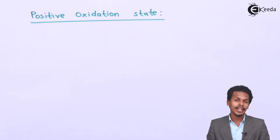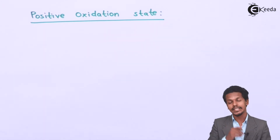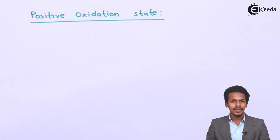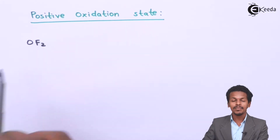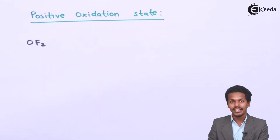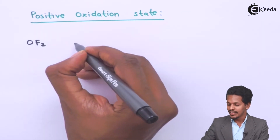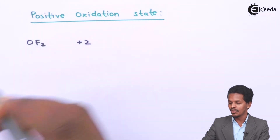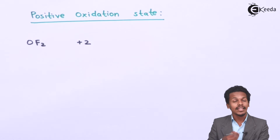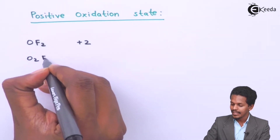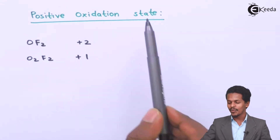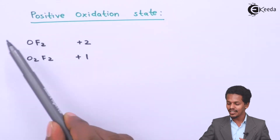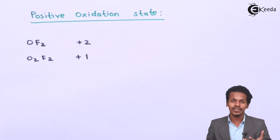Oxygen is the most electronegative element of group 16, but it is not always the case. For example, in OF₂, fluorine is the most electronegative element, so oxygen will have an oxidation state of plus 2. And if we talk about O₂F₂, then oxygen will have a positive oxidation state of plus 1.